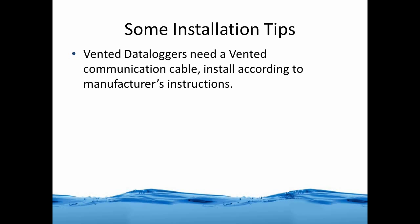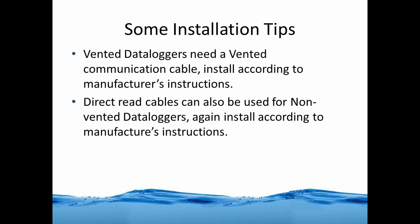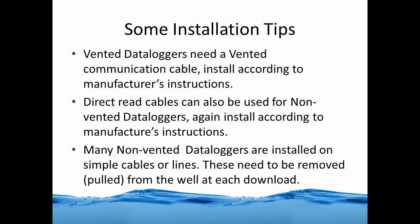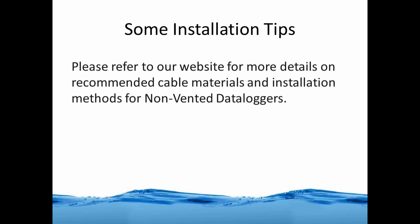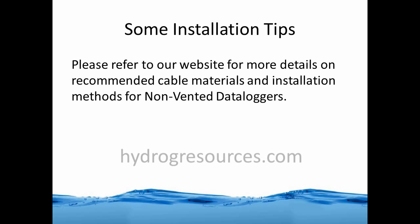Additional installation tips: vented data loggers need a vented communication cable and should be installed according to the manufacturer's instructions. Direct read cables can also be used for non-vented data loggers. Many non-vented data loggers are installed on simple cables or lines and need to be removed from the well every time you download the data. Our preferred method for hanging data loggers uses stainless steel cable with a hose clamp, a detachable clip, and stainless steel swage sleeves to hold the wire firmly in place. For more installation suggestions and recommended materials, visit HydrologyResources.com.